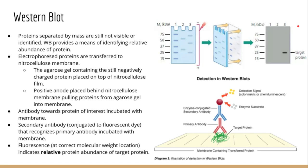To transfer the proteins from the gel to the nitrocellulose membrane, the two are sandwiched together with a positive anode placed behind the nitrocellulose membrane. Since the proteins are still coated with SDS they will be pulled from the gel into the membrane. The membrane is then incubated with a solution of antibodies that recognize your protein of interest. Your target protein is probed with a primary antibody; a secondary antibody that recognizes the primary is added, and the secondary is usually conjugated to a fluorophore.